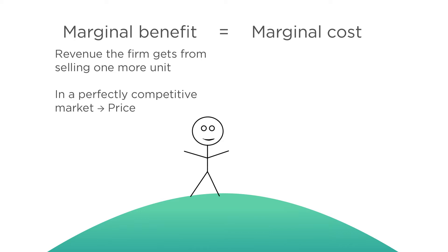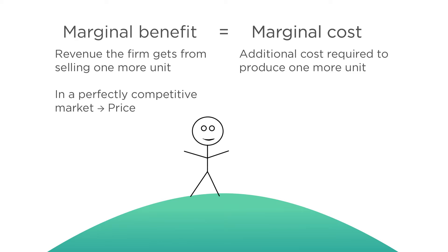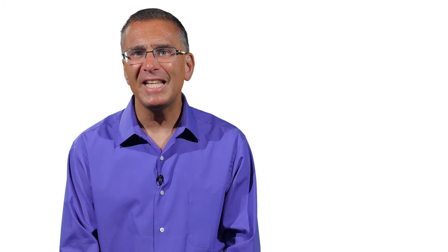The marginal cost is the additional cost required to produce one more unit. So in a perfectly competitive market in the short run, the firm will keep producing until price equals marginal cost — that is, the firm produces until the price it gets for the next unit exactly compensates it for the cost of producing that same unit.